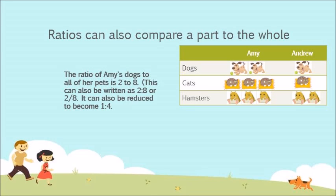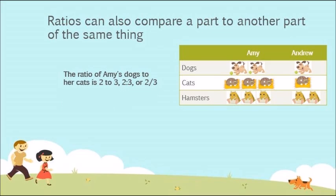Ratios can also compare a part to the whole. The ratio of Amy's dogs to all of her pets in this example is 2 to 8. This can also be written as 2:8 or 2/8. It can also be reduced to become 1 to 4.